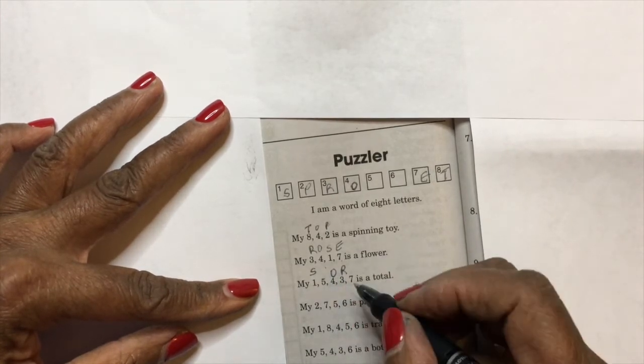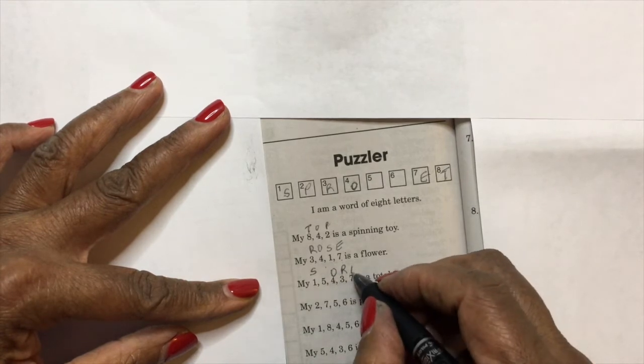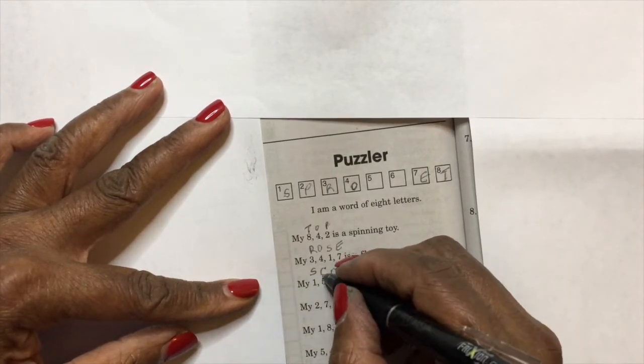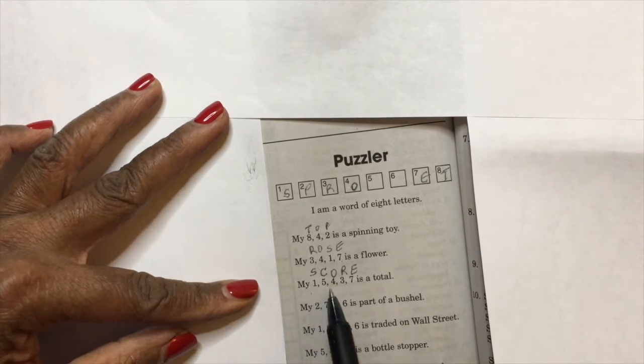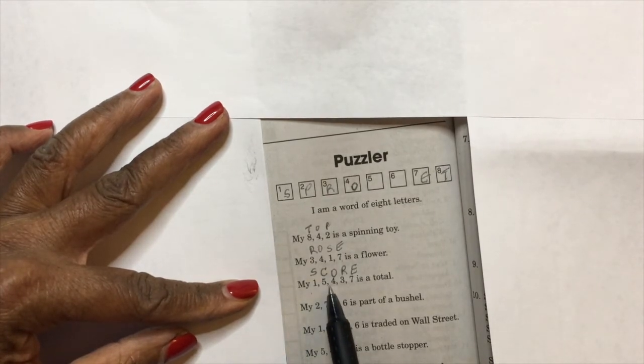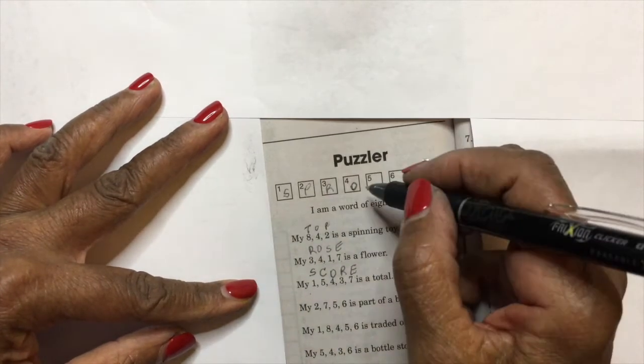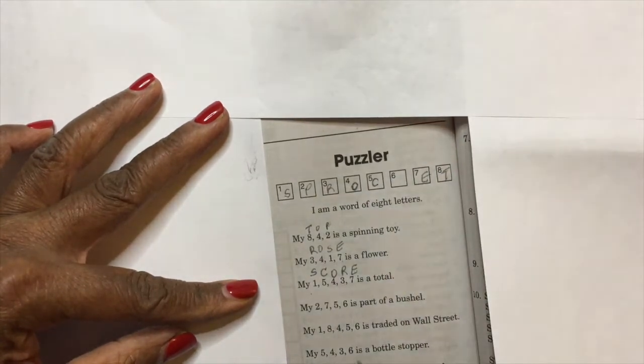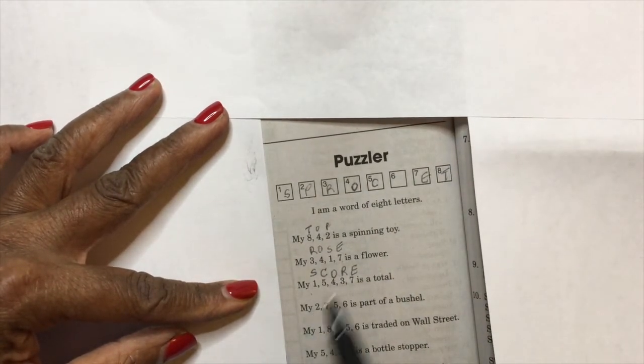And we know that seven is an E. Oh, okay, there you go. I think it would be 'score.' So let's guess that this clue is 'score.' That means number five would be C. I think I already know what